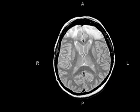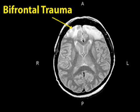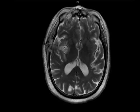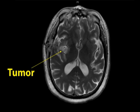This MRI shows bruising of both frontal lobes in a case of head trauma. Although head trauma without loss of consciousness rarely causes epilepsy, serious head trauma with prolonged unconsciousness sometimes does. People with seizures worry that they might have a brain tumor, like the one seen in this MRI, but fortunately tumors actually cause only a small percentage of seizures.